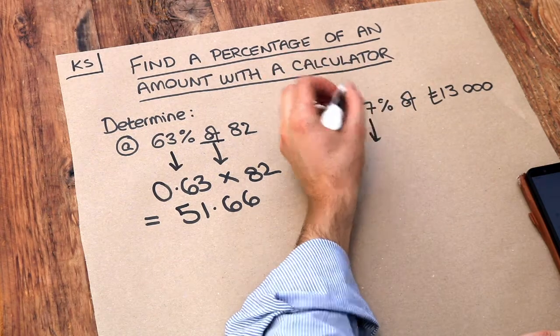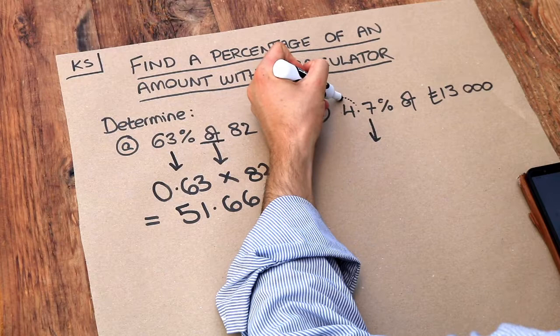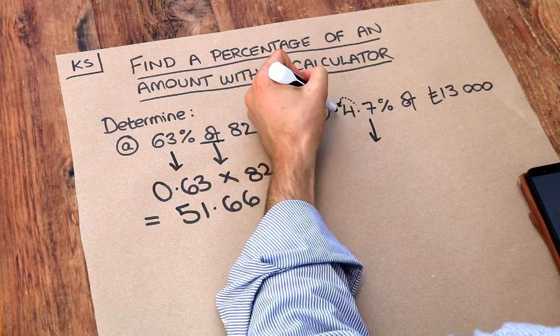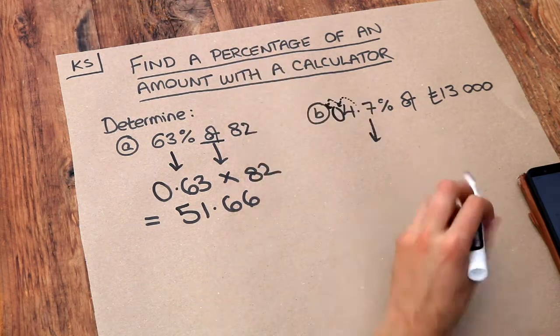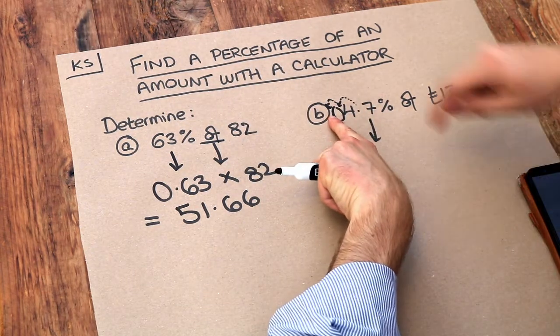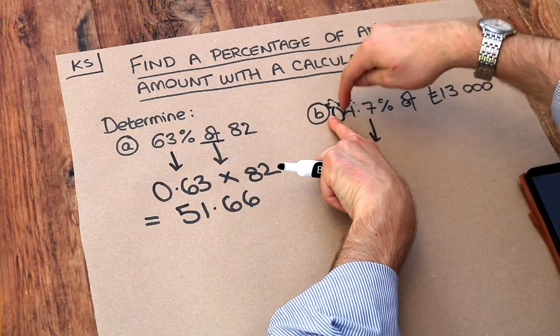So to divide by 100 we move the decimal point twice. So if we move it once to the left, it ends up here. Then I'm going to have to put an extra zero here because we've run out of digits. Then move it once again. Move it two places, it's now here. So we have 0.047.